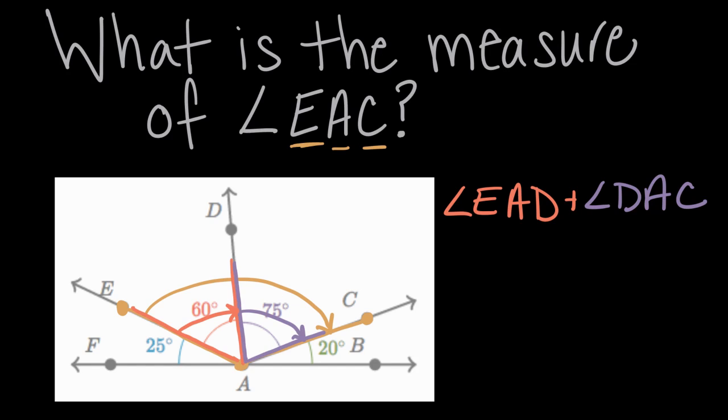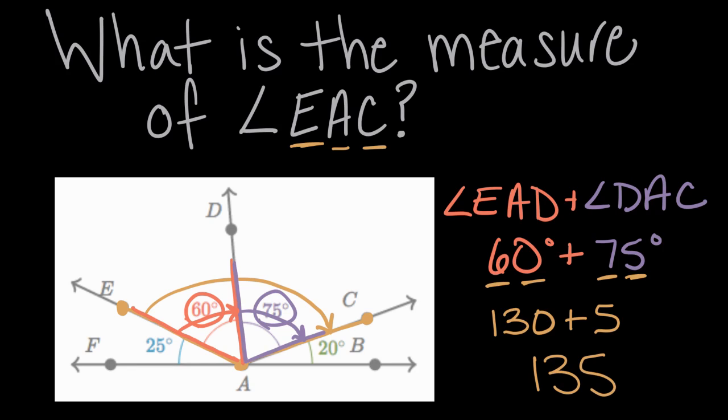So let's do that. Starting with angle EAD, we can see it's 60 degrees. Plus angle DAC has a 75 degree opening. If we combine that, 60 degrees to here plus another 75 down to here, we've covered our entire angle. Our entire opening is 60 plus 75. So we can add these to solve for the measure of our angle. Six tens plus seven tens is 13 tens, or 130. Plus zero ones and five ones is five ones. And so 130 plus 5 is 135 degrees.